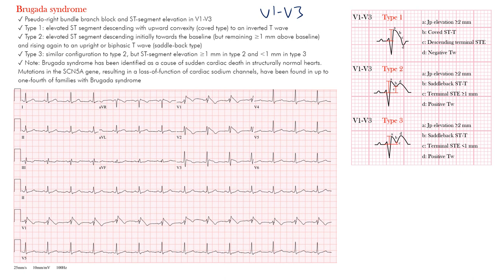It looks like a right bundle branch block, but it's actually because the ST segment is elevated — you have a high takeoff. So this is a pseudo right bundle branch block pattern that appears as one with concomitant ST elevation in those leads. There are three different types. Here's a standard 12-lead EKG showing V1, V2, and V3 — the right precordial leads are where we look for these findings.